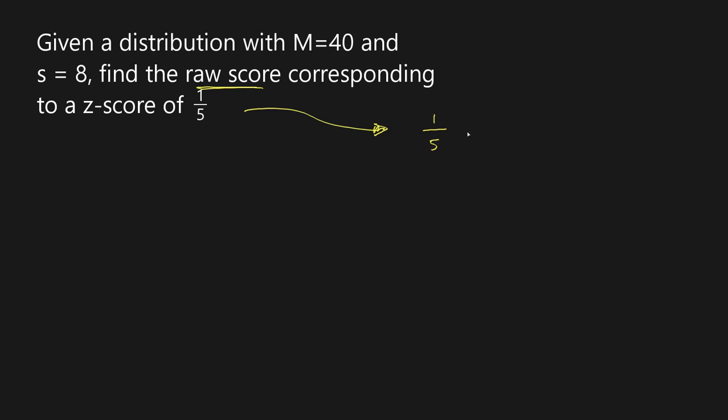1 over 5 is literally the same as 1 divided by 5. So just perform this calculation in your calculator and you'll see it comes out to be 0.2. It's much easier to deal with that than it is to try and work with fractions. So I'm just going to change this to z-score of z equals 0.2.